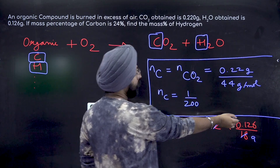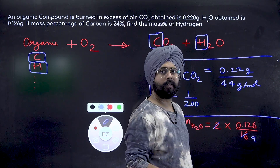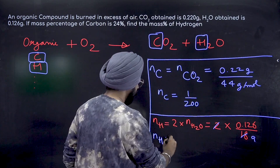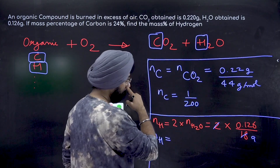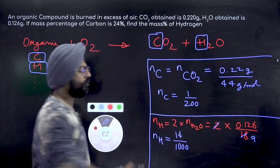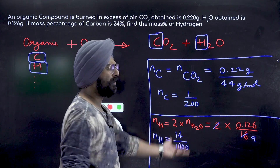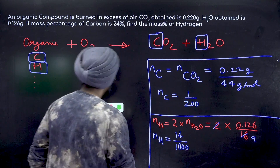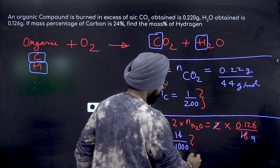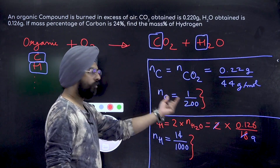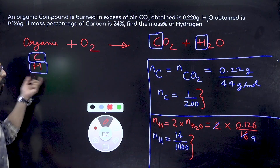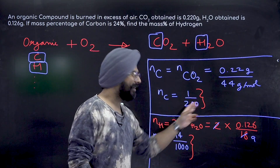Simplifying 0.126/18: dividing by 9 gives 14/1000. So the number of moles of hydrogen is 2 times 14/1000, which simplifies to 14/1000 — or 1.4/100. This is the number of moles of carbon and the number of moles of hydrogen that were present in the original sample. Now let's convert these moles into masses.